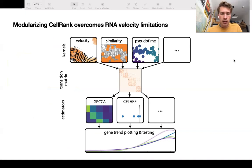However, I'm not going to go into any details on that. I do want to mention, though, that we've been working on generalizing CellRank recently, so making it also applicable to settings where RNA velocity is not available by modularizing it into kernels and estimators.